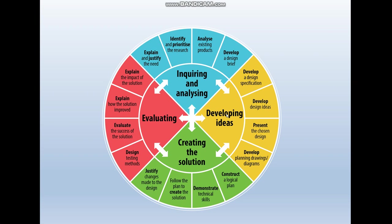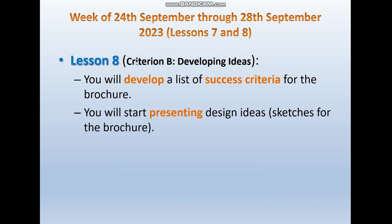In lesson 8 we will start a new criterion: criterion B — developing ideas. It contains four sub-criteria inside that we will go through during the next lessons. During lesson 8 you will develop a list of success criteria for the brochure, and you are also requested to start presenting your design ideas — sketches for the brochure.